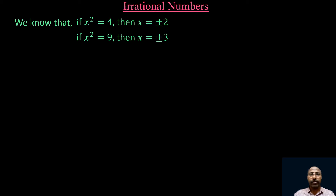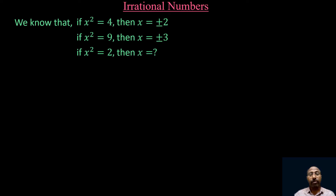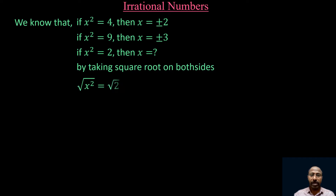And similarly, if x² = 9, then x equals plus or minus 3. And if x² = 2, then what is the value of x? If we take square root on both sides, then square root of x² equals square root of 2. The square and root cancel, so we are left with x equals plus or minus root 2.